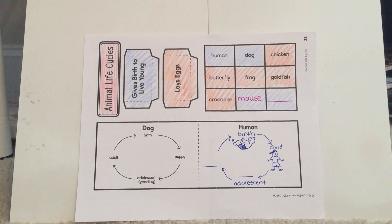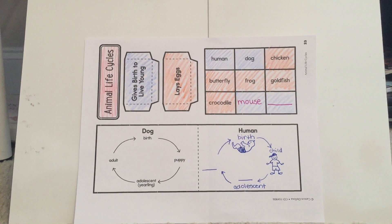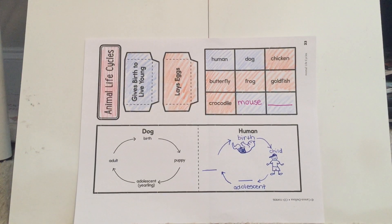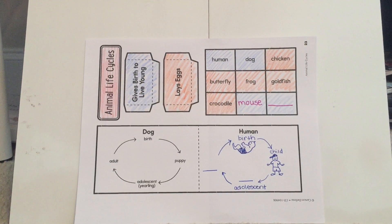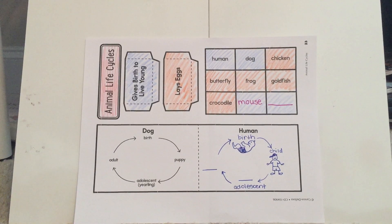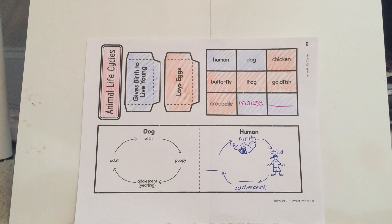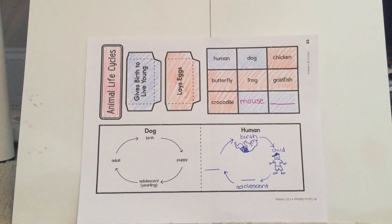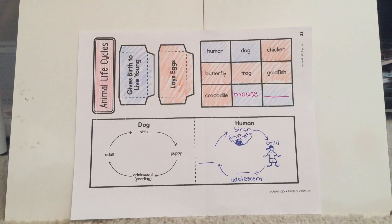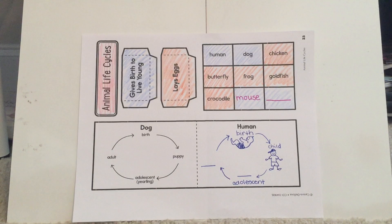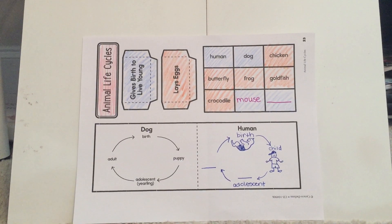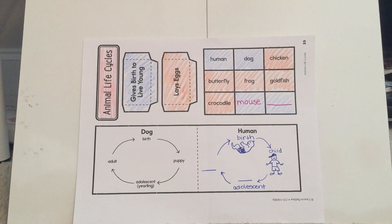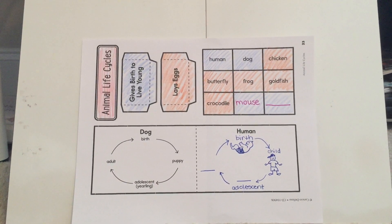This all goes in your science interactive notebook. If you don't have that yet, keep everything together and maybe don't cut it out until you can paste it in. At some point you'll need to come to school and pick up the notebook — it will be available in the crate. If you have any questions or concerns, please have Mom or Dad email me or message me over Seesaw. Hope you have fun with this activity on animal life cycles!